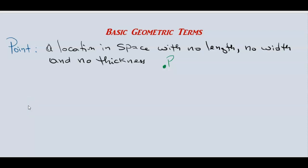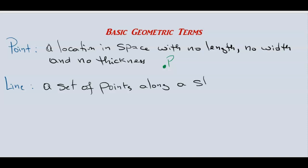Now that we know what a point is, let's talk about a line. A line is a set of points along a straight path with no endpoints. A line does not have an end — we describe a line as a set of points along a straight path with no endpoints.